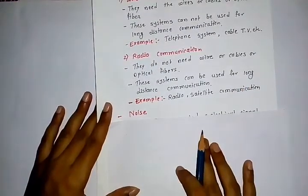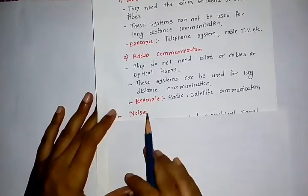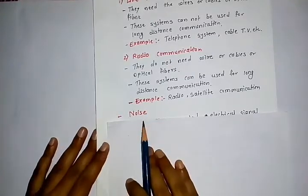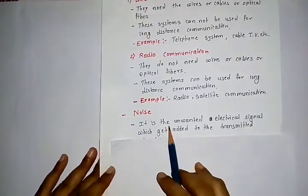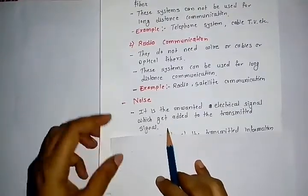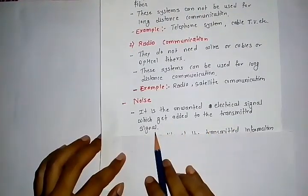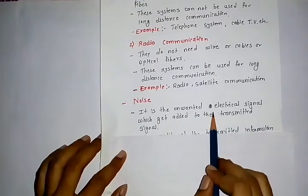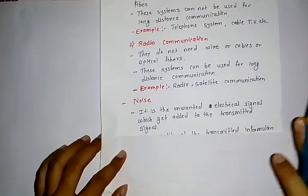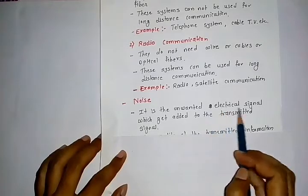The next block is noise. Noise is the unwanted electrical signal which gets added to the transmitted signal. This means the signal that we do not need gets added to the communication channel along with the information we are transmitting.